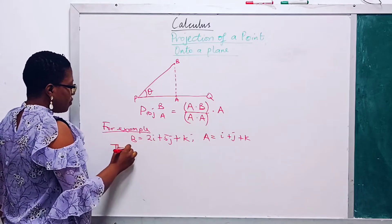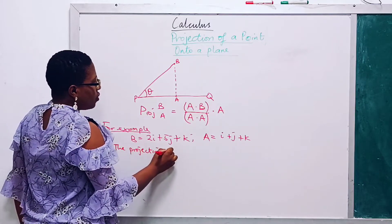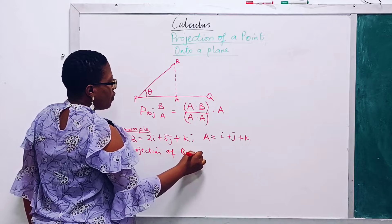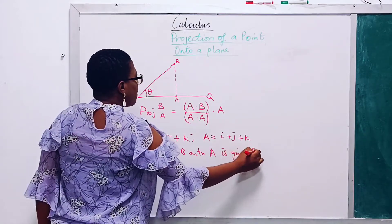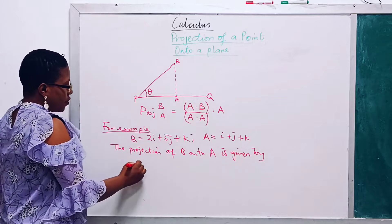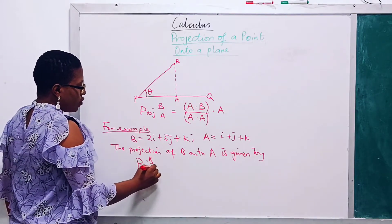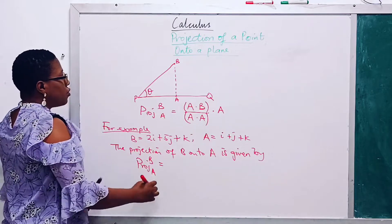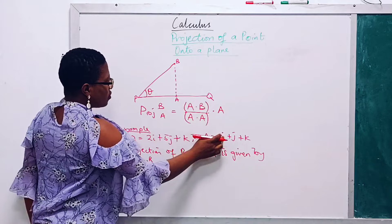Then the projection of B onto A is given by projection of B onto A. It is equal to, what is A dot B? So we say this times this.